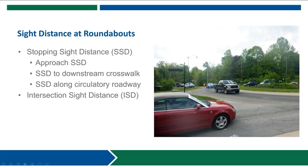There are a couple different sight distances that need to be verified at any roundabout. This includes stopping sight distance approaching the intersection, as well as along the circulatory roadway and to the various crosswalks around the roundabout, as well as intersection sight distance where vehicles approaching the entry are able to adequately see conflicting traffic and make appropriate decisions about when to enter.